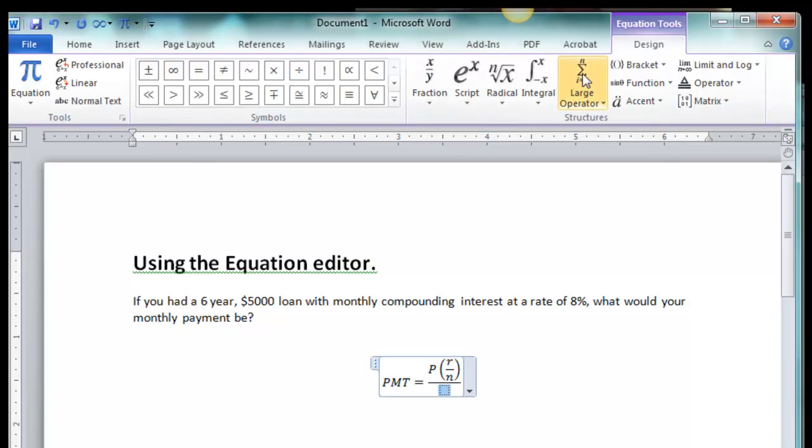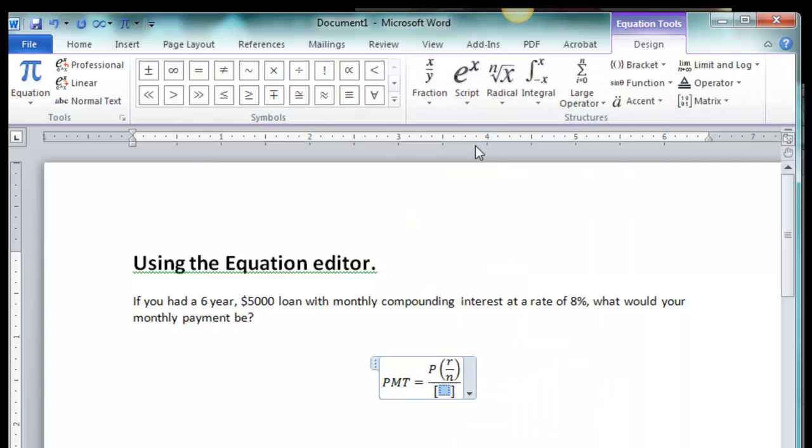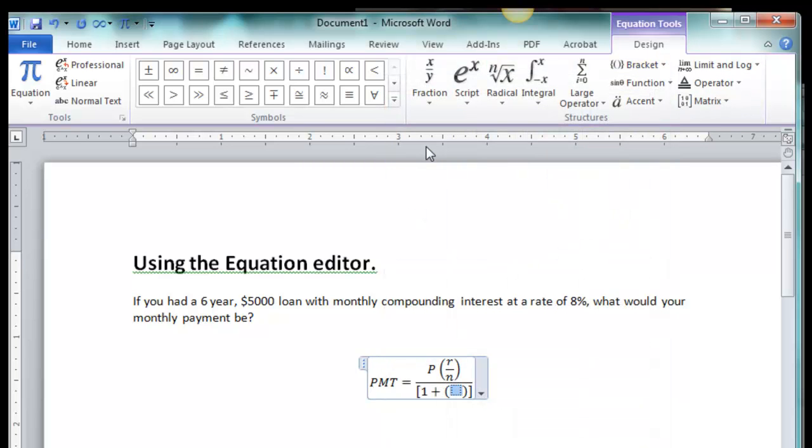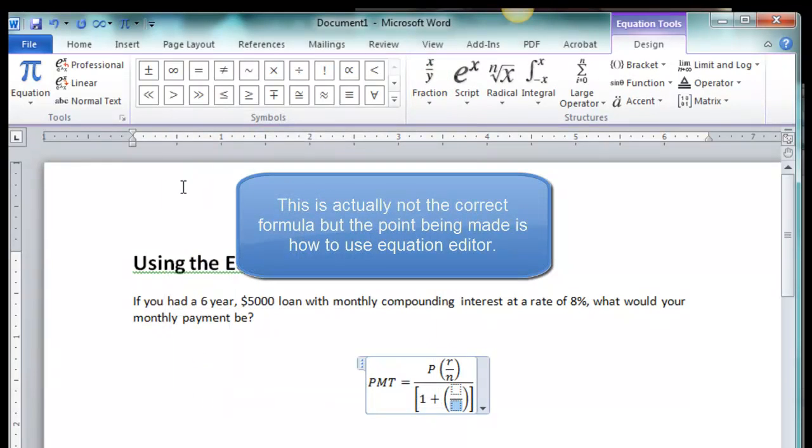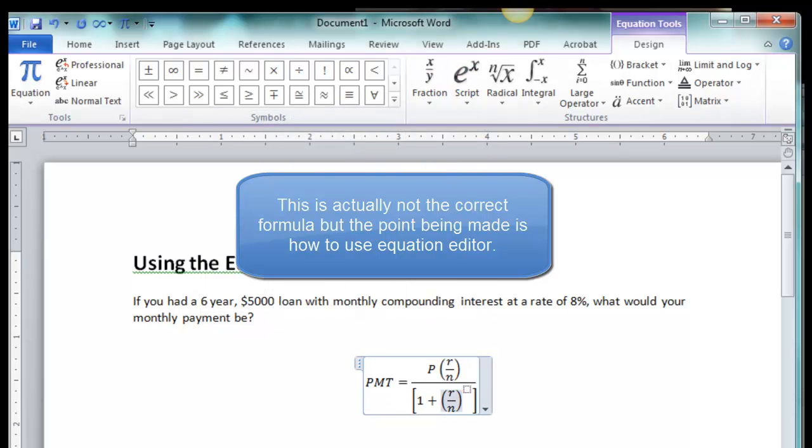The bottom, square brackets, right, so where's my square brackets, right there. 1 plus, plus brackets again, parentheses, and here I need a fraction, r over n. Now I need to highlight that whole chunk because I want that to a power, and up here is the negative nt power.